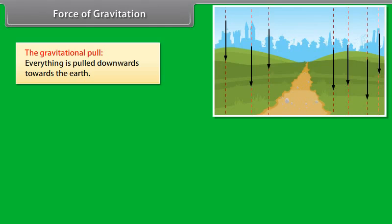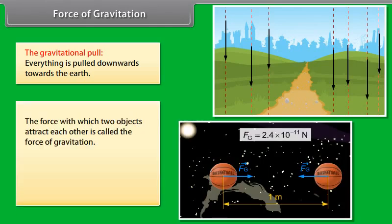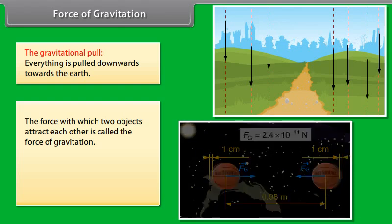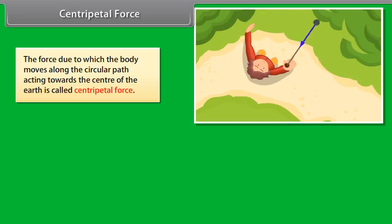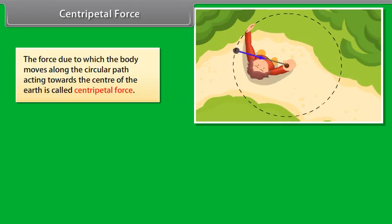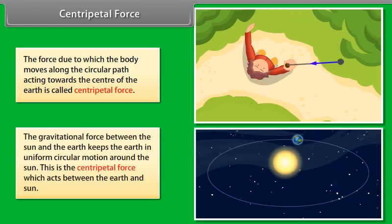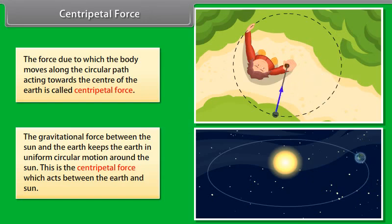Force of gravitation: everything is pulled downwards towards the earth. The force with which two objects attract each other is called the force of gravitation. This force acts even if the two objects are not connected to each other. Centripetal force is the force due to which a body moves along a circular path, acting towards the center. The gravitational force between the Sun and the earth keeps the earth in uniform circular motion around the Sun — this is the centripetal force.